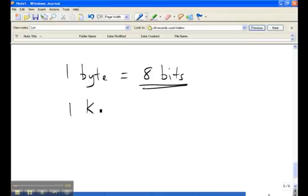One kilobyte is 2 to the power of 10 bytes. And that's not 1000, it's actually 1024.